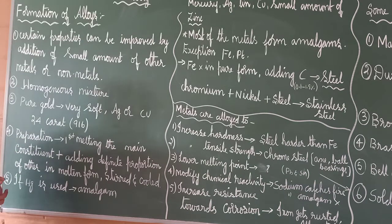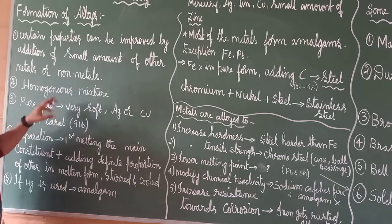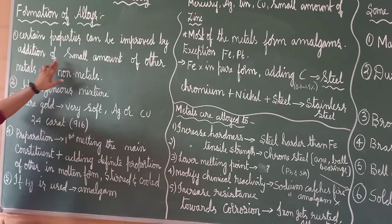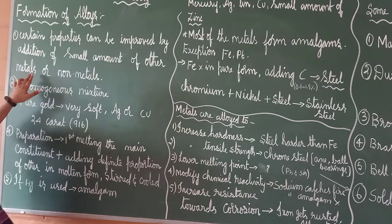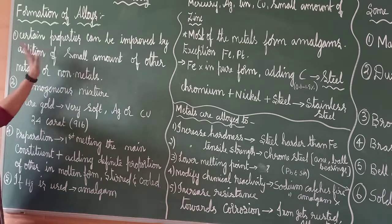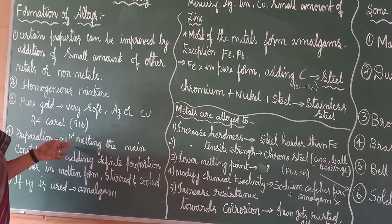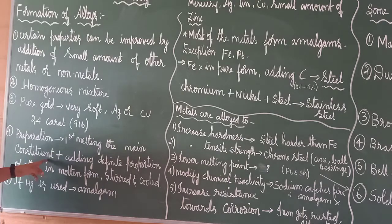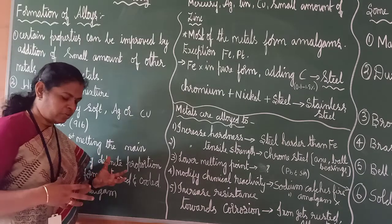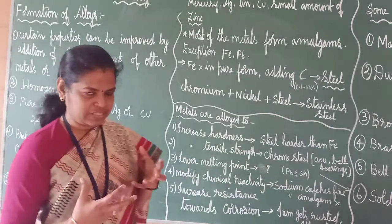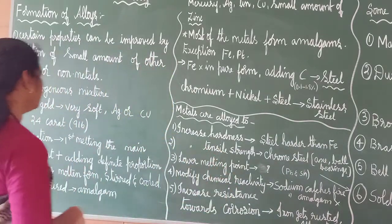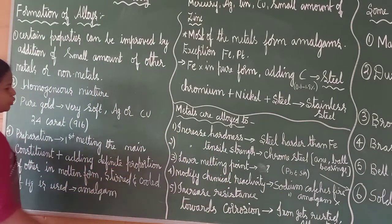Now, how will we prepare alloy? Two things will be taken. With some metal, some other metal is added as addition of small amount of other metal or non-metal. So, we are preparing. What we are taking now, the metal will be in melting form. First is melted, and the main constituent, whichever metal you are taking now, that will be melted. That is the main constituent. And then you are adding definite proportion.